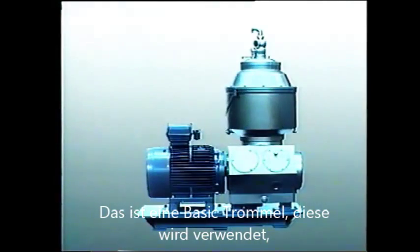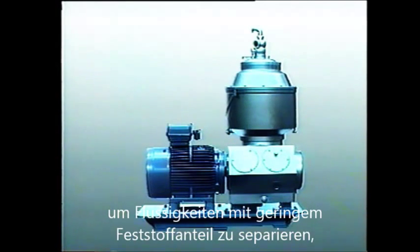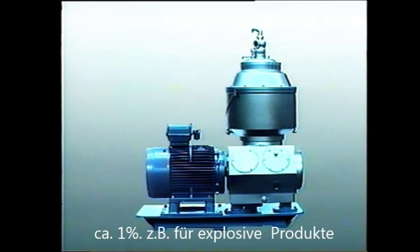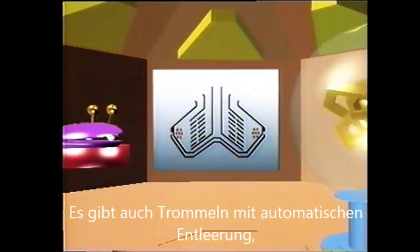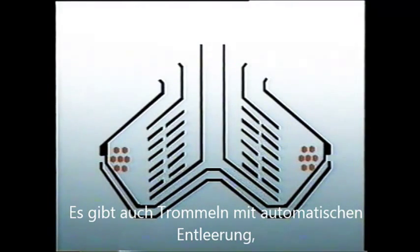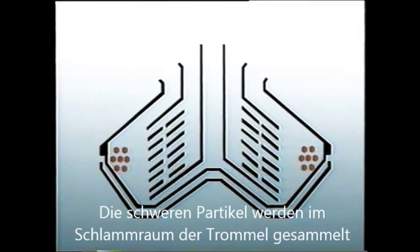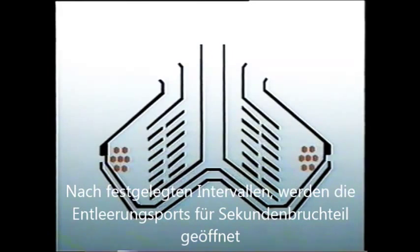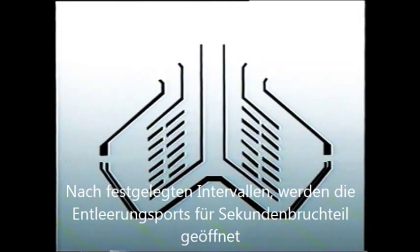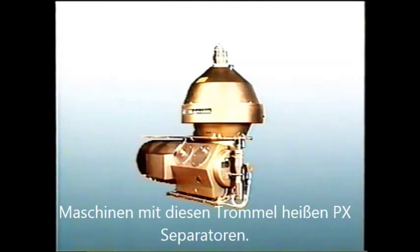This is the basic type, used for liquids containing a low percentage of solids — up to 1% — including products like explosives, edible oils, soap, and rubber or latex. The bowl may also be made solid ejecting, that is, of the self-cleaning type. The separated solids that accumulate in the sludge space of the bowl are ejected by centrifugal force. At certain intervals, discharge ports around the periphery are uncovered for a fraction of a second. These are known as PX separators.